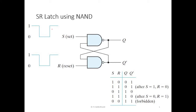Let us see the SR latch implementation using cross-coupled NAND gates. As you can see, this is a circuit with active low input. That means if I wanted to set the circuit to 1, that is if I wanted to make Q equal to 1, my S should be 0 — that is active low input. And if I wanted to reset the circuit, that is if I wanted Q equal to 0, then I have to set R equal to 0. Let us see how this circuit works.